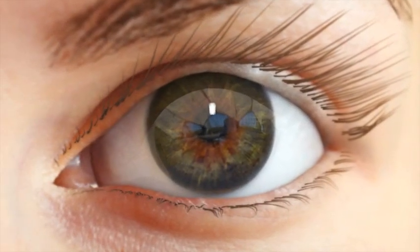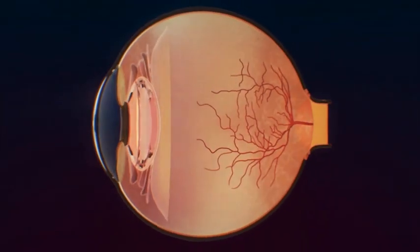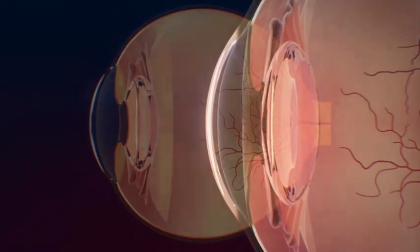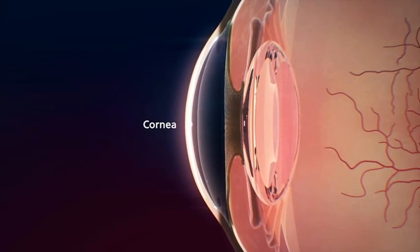The eyes are able to adjust the amount of light that enters, focus on objects, and instantly transmit images to the brain. Light enters the eye through the cornea, which helps focus light on the retina at the back of the eye.